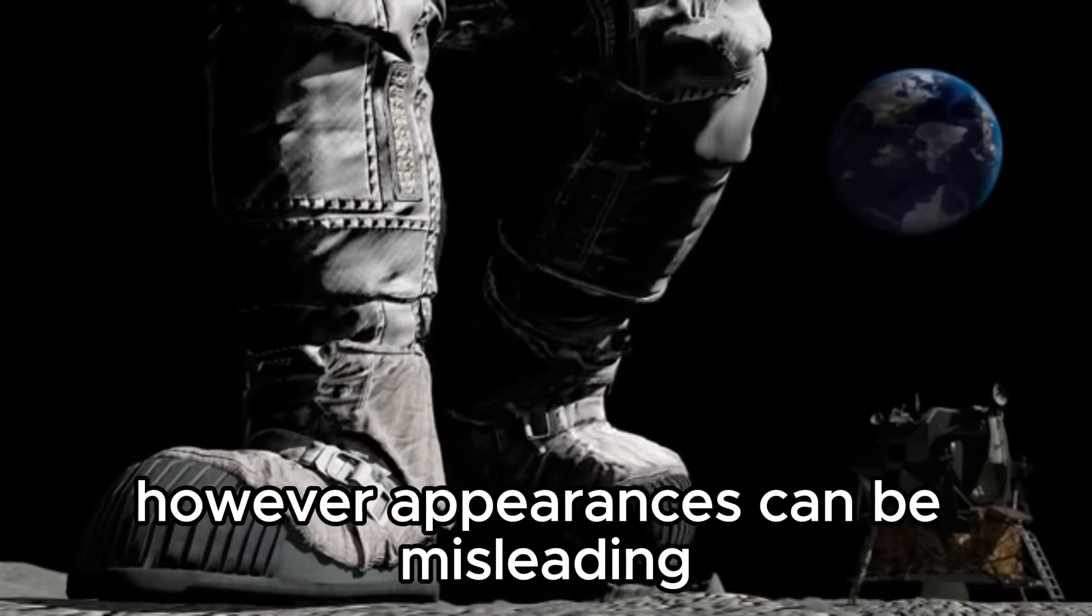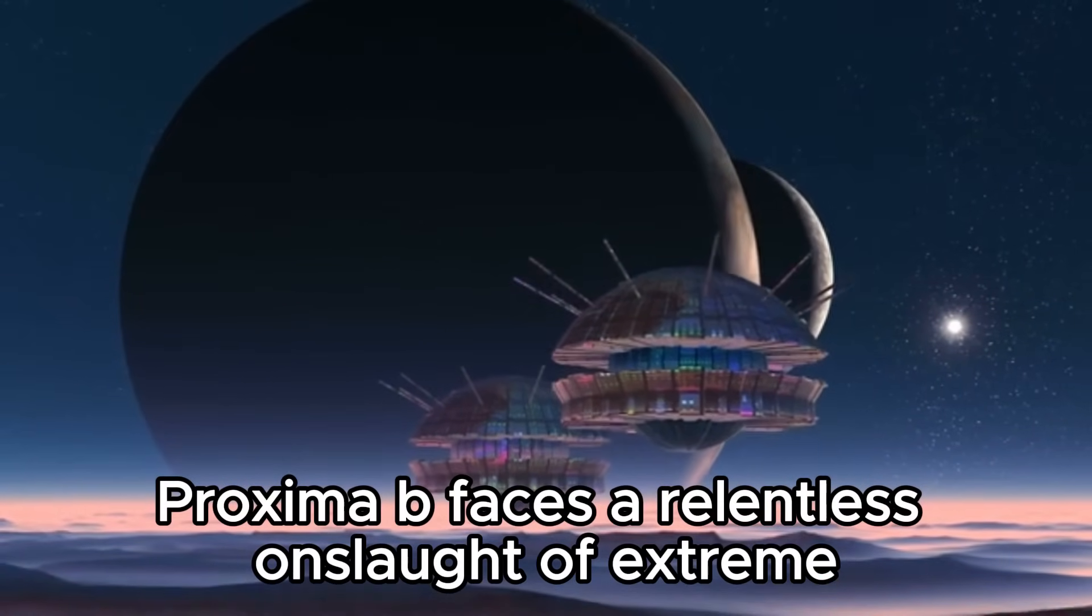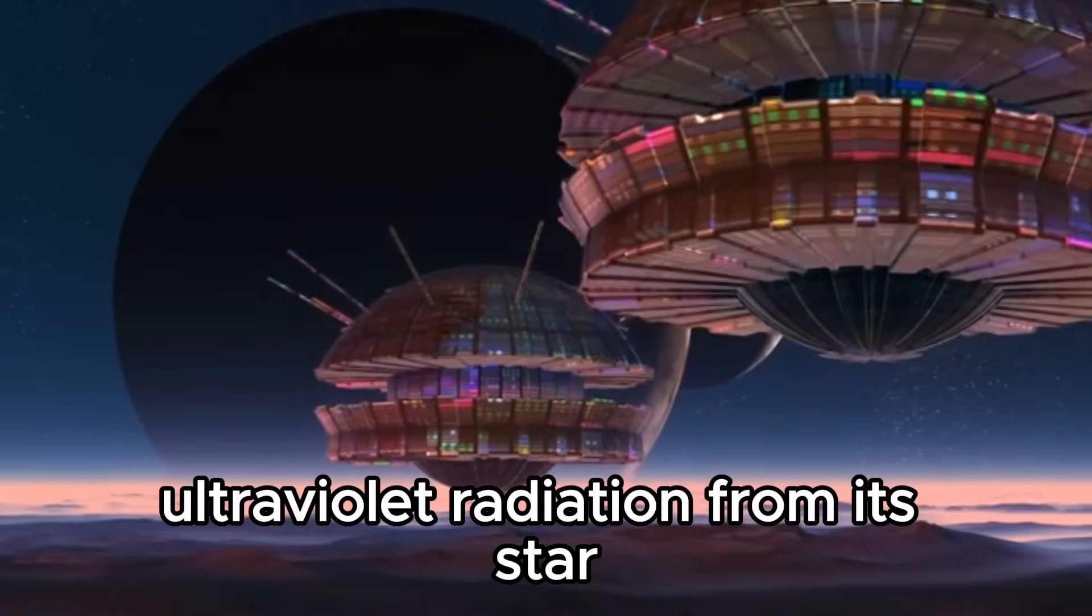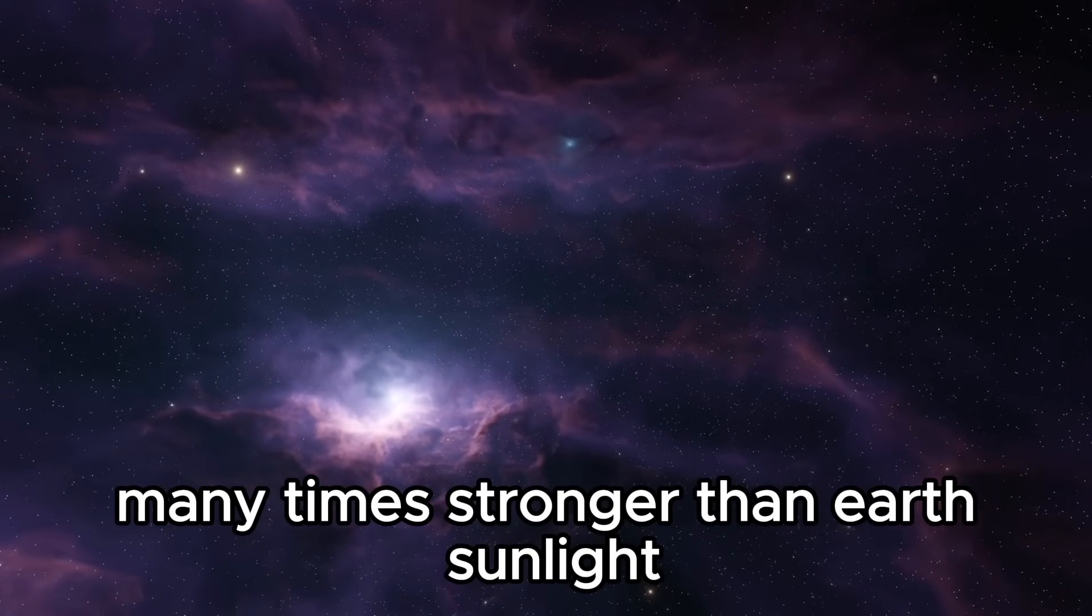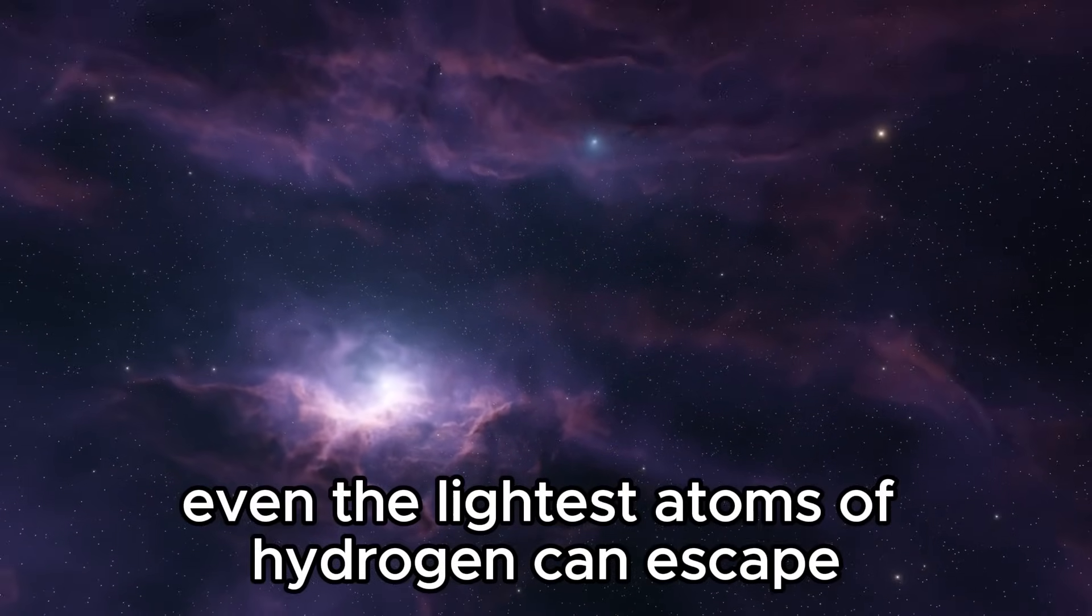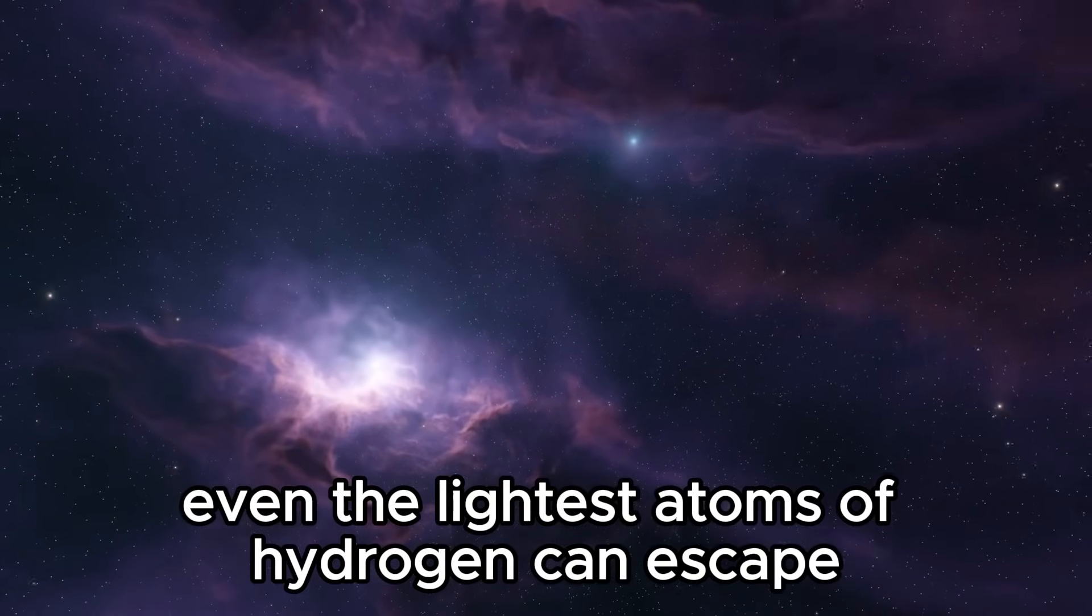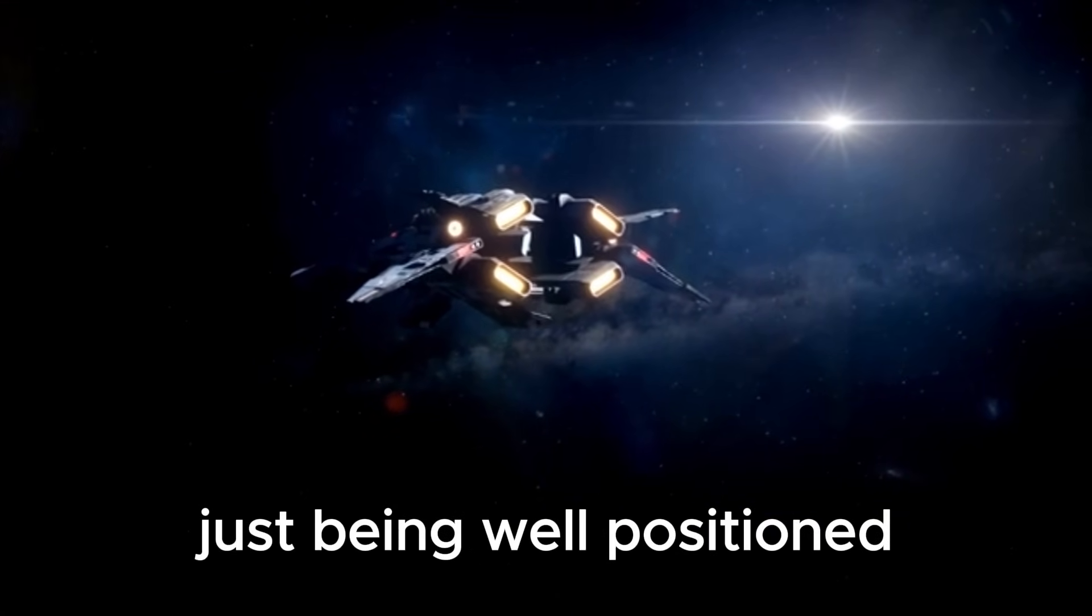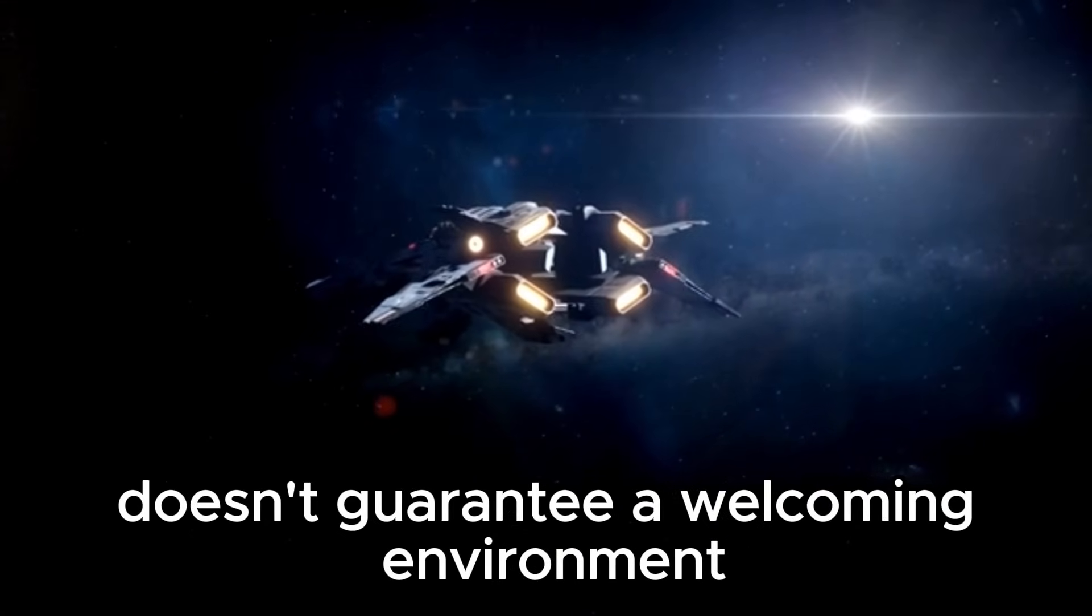However, appearances can be misleading. Proxima b faces a relentless onslaught of extreme ultraviolet radiation from its star, many times stronger than Earth's sunlight. Even the lightest atoms of hydrogen can escape, leaving nitrogen and oxygen in danger. Just being well-positioned doesn't guarantee a welcoming environment.